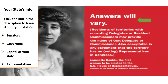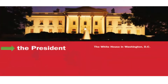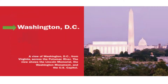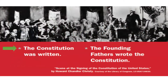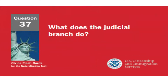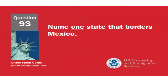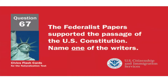Name your U.S. Representative — answer will vary, please look at the description part of this video to find a link to the answer. Who is in charge of the executive branch? The president. What is the capital of the United States? Washington, D.C. What happened at the Constitutional Convention? The Constitution was written. What does the judicial branch do? Reviews laws. Name one state that borders Mexico. California.